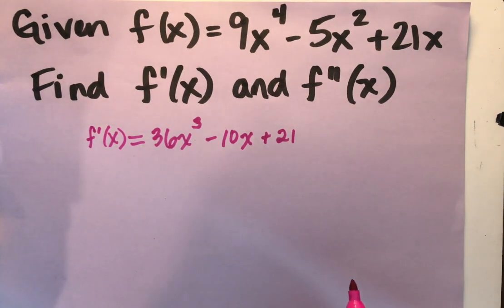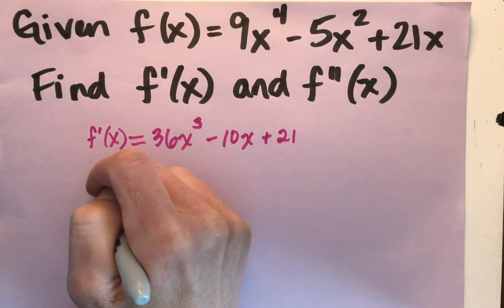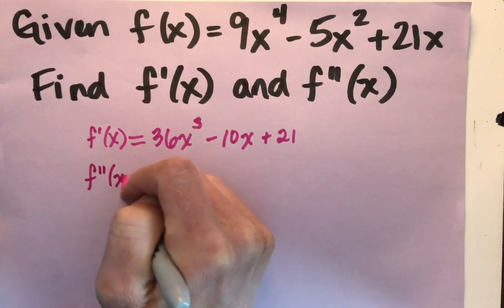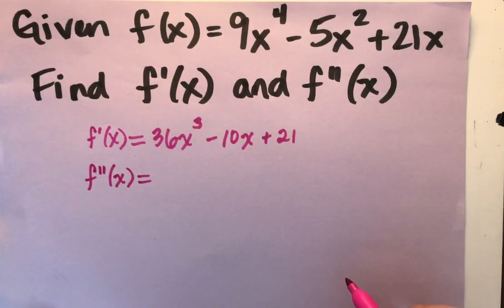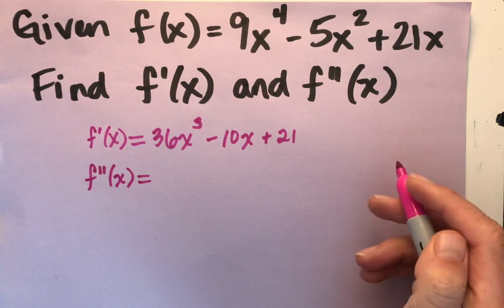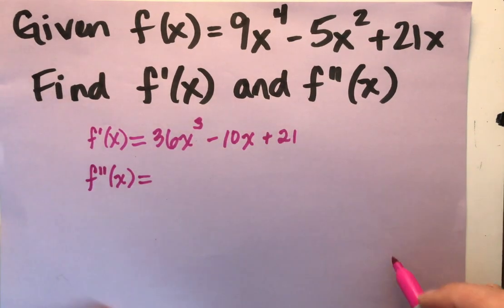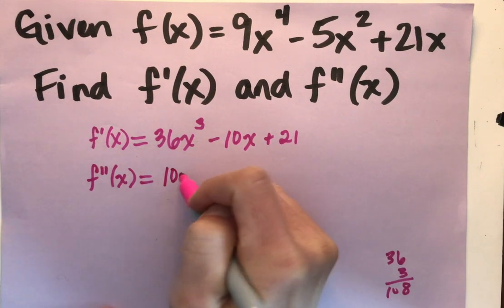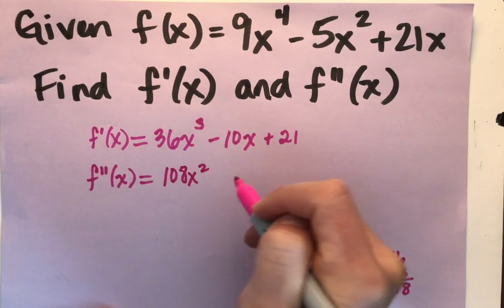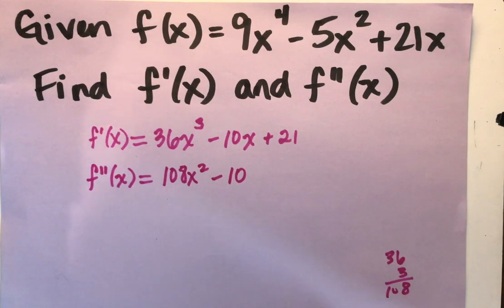So to find f double prime from f prime, I am going to do that process one more time. I'm just going to use the shortcut on f prime of x to get f double prime of x. So the 3 will come down. 36 times 3, I do not know offhand. Let's see, that's going to be 36 times 3, 108 x squared minus 10. And I have found my second derivative.